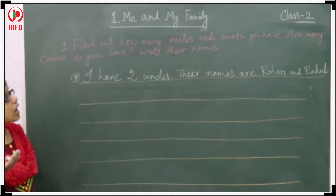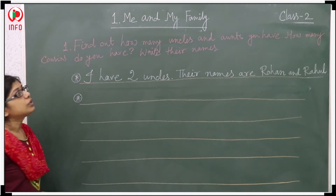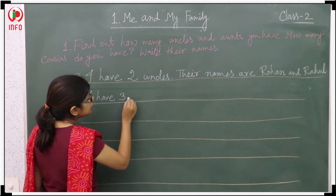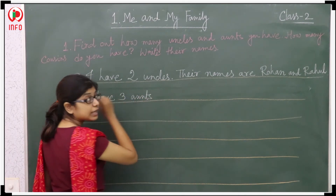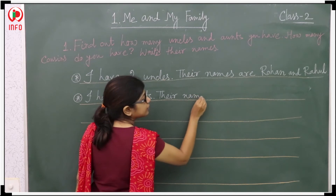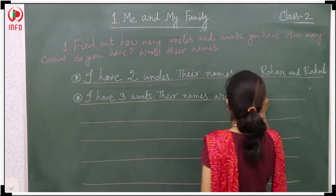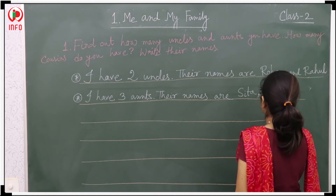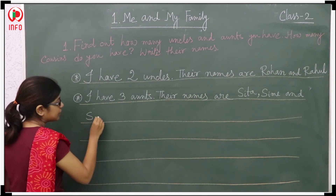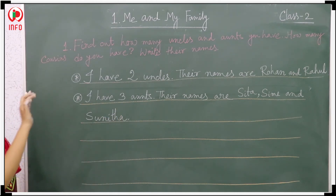And how many aunts you have — that one also I have to find out. Actually I have three aunts. I will write here that I have three aunts. And their names are Sita, Sima, and Sonita. So like that I have completed the first one.